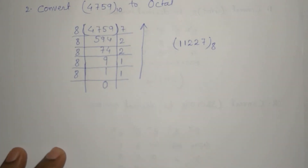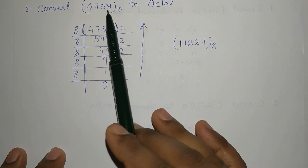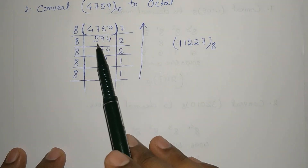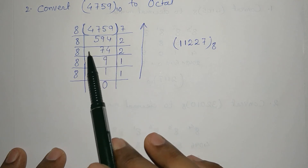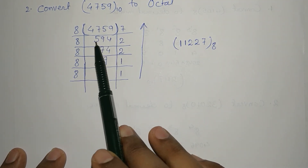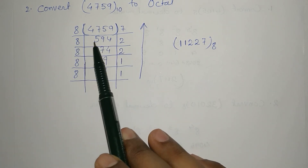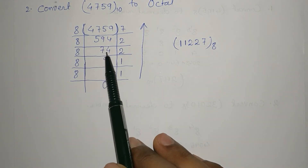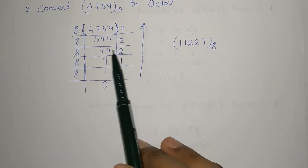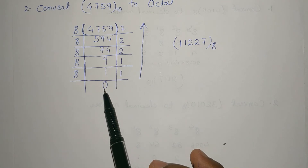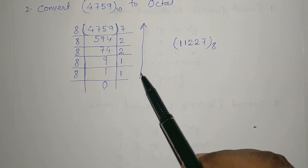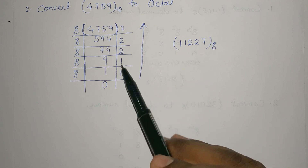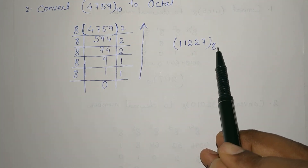Another example: convert 4759 base 10 to octal. Dividing 4759 by 8 gives quotient 594 and a remainder. Then divide 594 by 8 — quotient 74, remainder 2. Keep dividing until the quotient reaches 0. Writing the remainders from bottom to top gives the final answer: 11227 base 8.